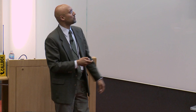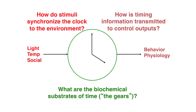We think of the clock in three parts. The questions we're trying to answer: what are the biochemical substrates of time — the gears of the clock? We're talking about a 24-hour biological clock driving our sleep-wake cycles. What are the pieces, how do they fit together to make a 24-hour clock? How is this information transmitted to control outputs like the sleep-wake cycle? And how does the environment synchronize this clock? Something has to reset it, because unfortunately our clocks are not perfect 24-hour timers.